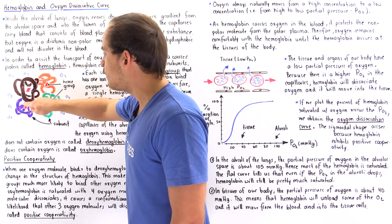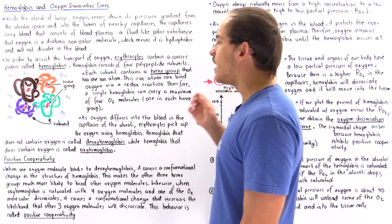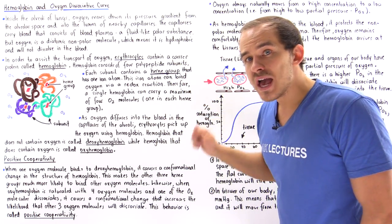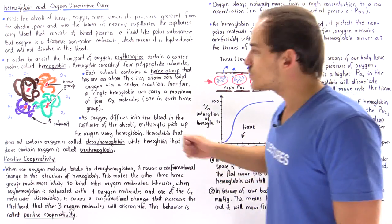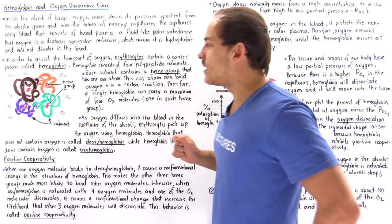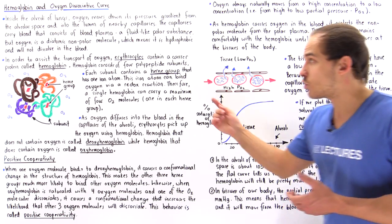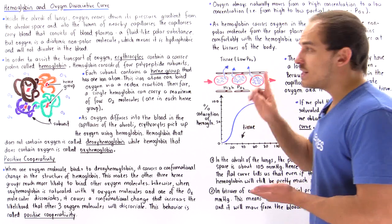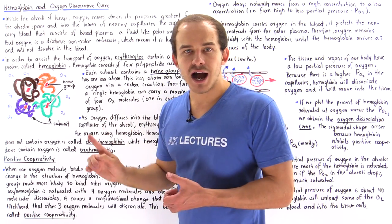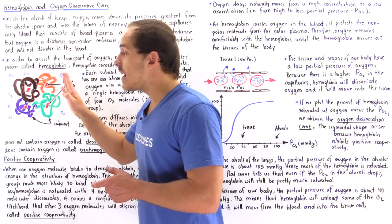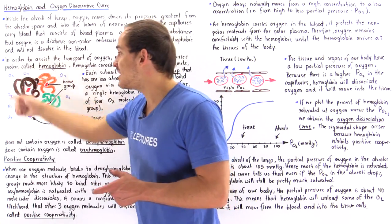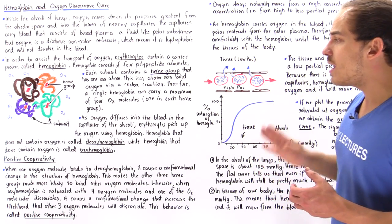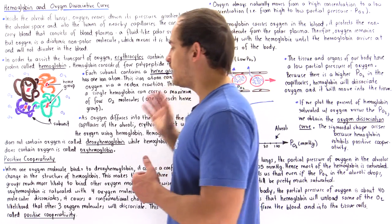We have 1, 2, 3, 4 heme groups, and each one contains a single iron atom. This iron atom can bind oxygen via an oxidation-reduction process — the iron changes its oxidation state via a redox reaction to bind oxygen. One heme group can bind a single diatomic oxygen molecule, so because we have 4 heme groups in a single hemoglobin, a maximum of 4 diatomic oxygen molecules can be carried by hemoglobin.